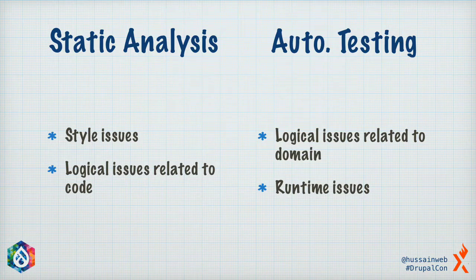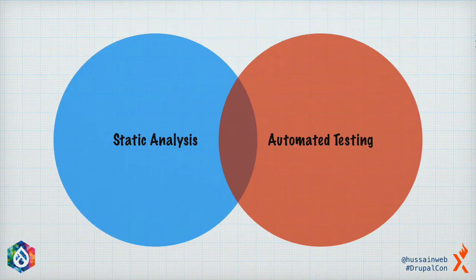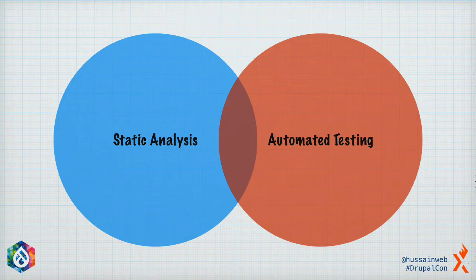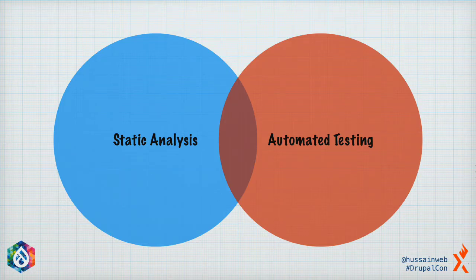In my opinion, both static analysis and automated testing are equally important. The issues covered by static analysis and automated testing form event diagrams with a kind of overlap. You would notice there is overlap, which is fine, but ideally you would aim to reduce it.